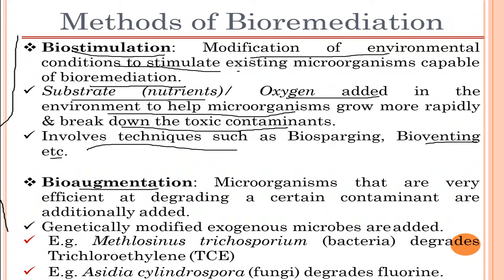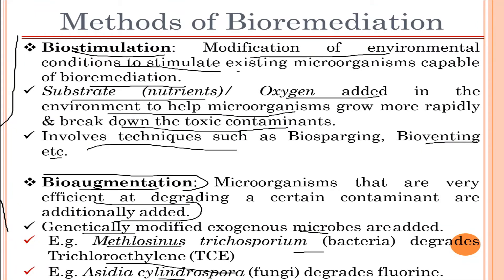Talking about bio-augmentation: microorganisms that are very efficient at degrading a certain contaminant are additionally added. Genetically modified exogenous microbes are also added, such as Methylosinus trichosporium, a bacteria that degrades trichloroethylene, and Acedia cylindrospora, a fungi which degrades fluorene. These are some of the important microbes added for degrading certain contaminants.